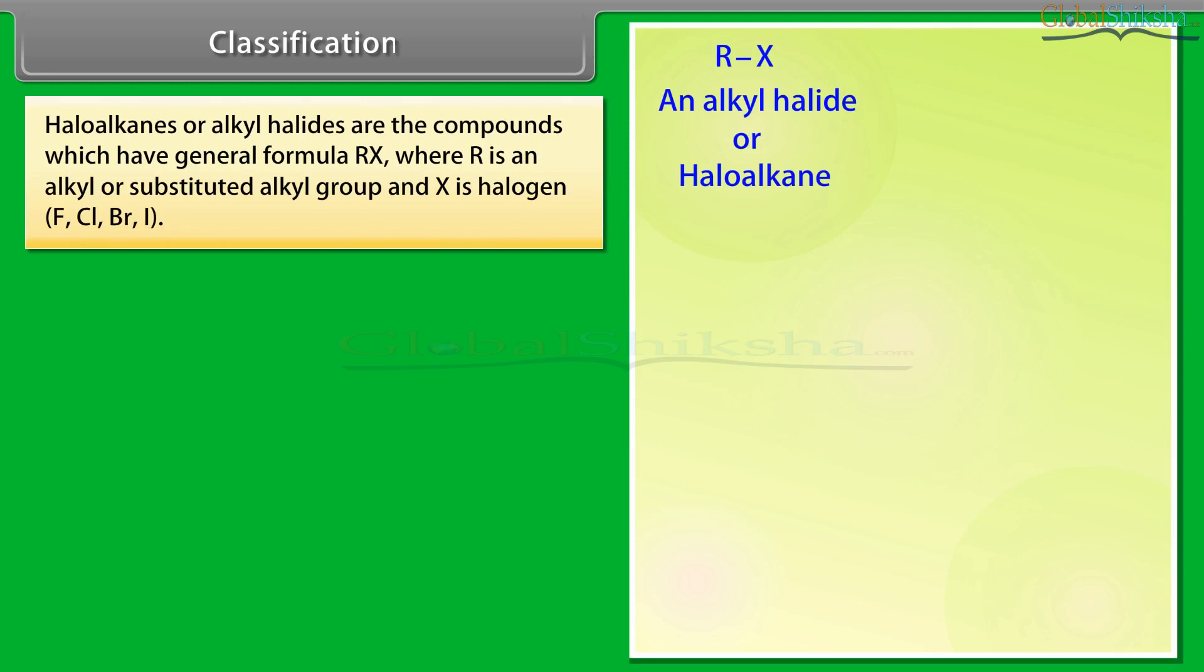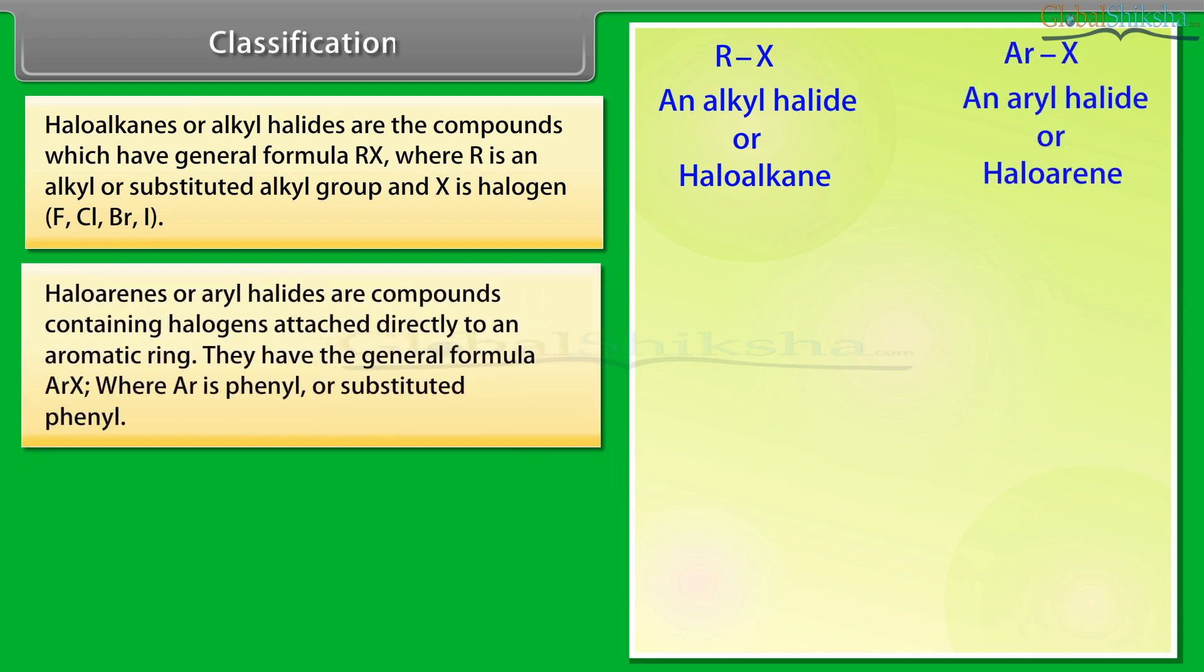Haloalkanes or alkyl halides are the compounds which have the general formula RX where R is an alkyl or substituted alkyl group and X is the halogen F, Cl, Br or I. Haloarenes or aryl halides are compounds containing halogens attached directly to an aromatic ring. They have the general formula RX where R is phenyl or substituted phenyl.